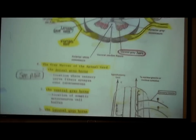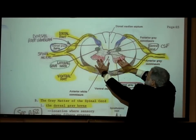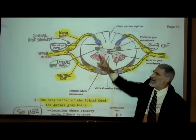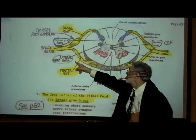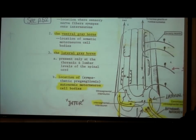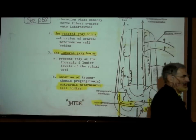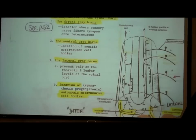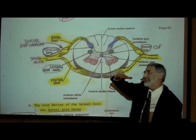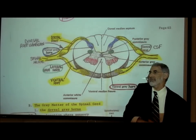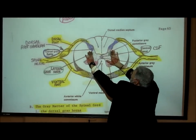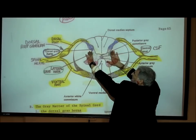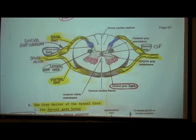Back on page 65: the lateral gray horns are only present at the thoracic and lumbar levels of the spinal cord. At cervical or sacral levels, we don't even have lateral gray horns — the gray matter just looks like an H without those little bulges. But at thoracic and lumbar levels, the lateral gray horns are the location of autonomic motor neuron cell bodies. That's where autonomic motor neurons originate.